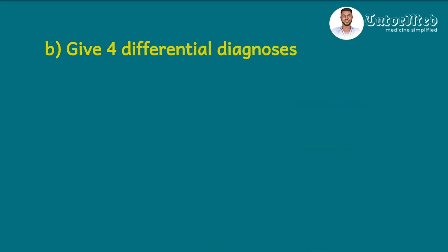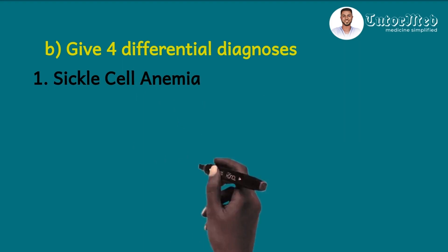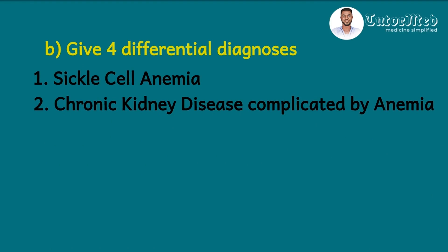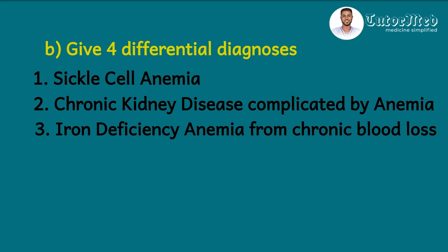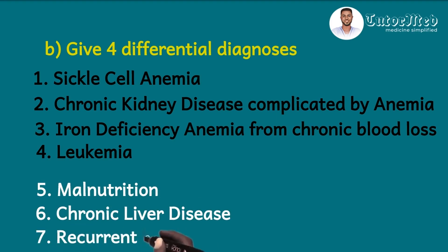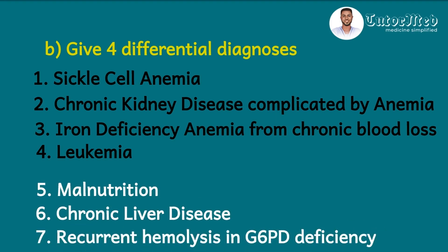The second question says: give four differential diagnoses. Remember these diagnoses should be chronic conditions, so please do not be tempted to write malaria. The four differentials include: sickle cell anemia; chronic kidney disease complicated by anemia; iron deficiency anemia from chronic blood loss, in this case likely a bleeding peptic ulcer disease; and leukemia. Other differentials may include chronic malnutrition, chronic liver disease, recurrent hemolysis in a patient with G6PD deficiency, and HIV and AIDS.